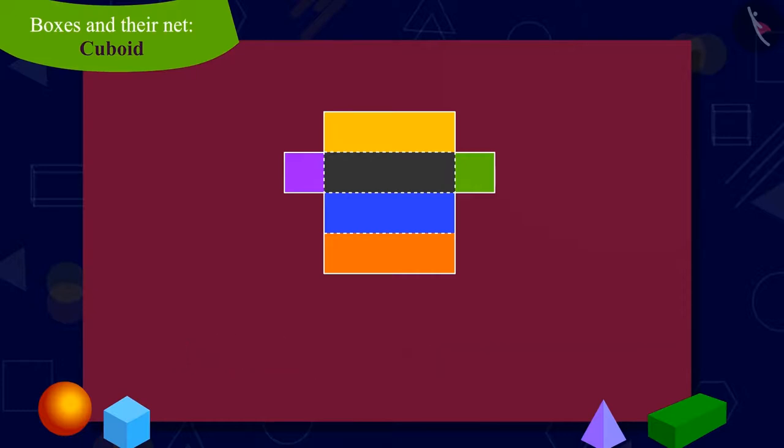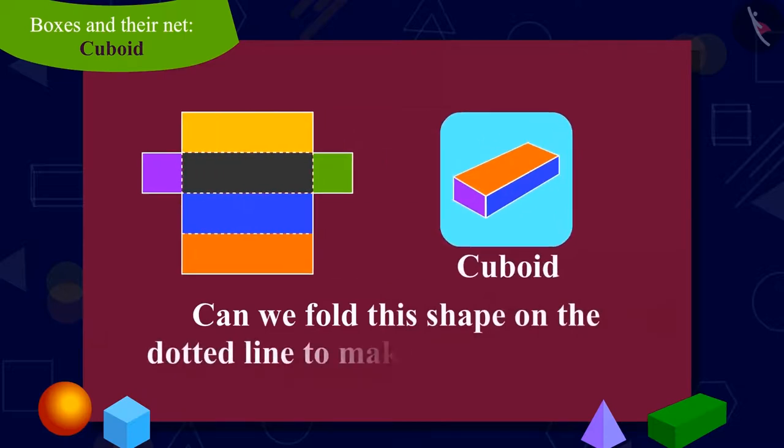In other words, can we make a box shaped like a cuboid by folding this cutout on the dotted line? You can find the answer to this question by pausing the video.